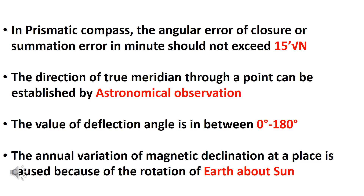The direction of the true meridian through a point can be established by astronomical observation. The value of a deflection angle is between 0 to 180 degrees, and a direct angle is between 0 to 360 degrees.